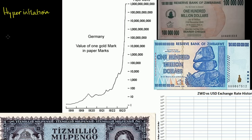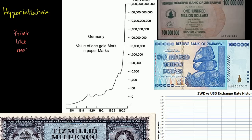The general idea of how hyperinflation happens, at least in the cases we've seen in modern times, is you have some type of a government just going wild with the printing press. They're just printing a ton of money. The general cycle is they print like mad, usually because they don't have any other way of getting revenue.